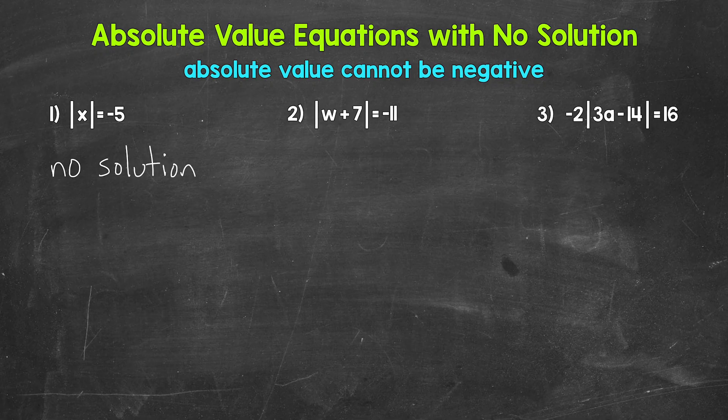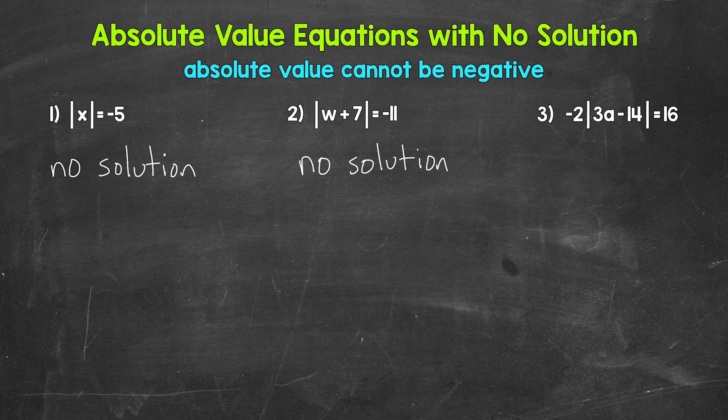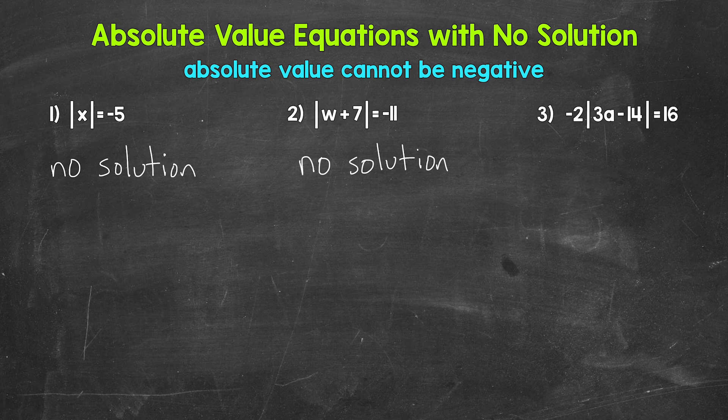No way to make that absolute value equal negative 11. So this is another example of an equation with no solution. And then lastly, let's move on to number three, where we have negative two times the absolute value of 3a minus 14 equals 16.